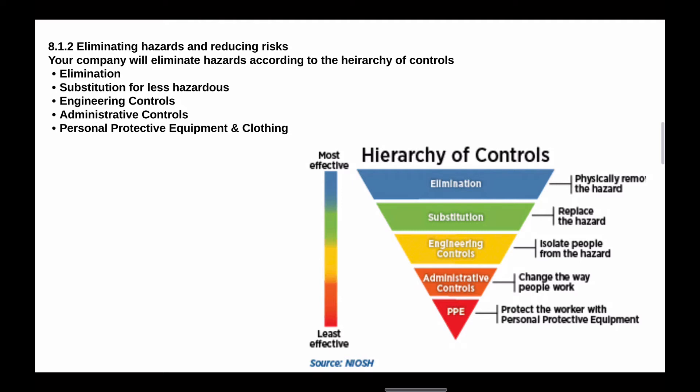If we also had to apply the same to the storage, handling, and usage of hazardous chemical substances — again, how you would apply the hierarchy of controls to manage those substances: how you would eliminate, how you would substitute, what engineering controls, what administrative controls, policies, procedures, work instructions, and PPE you would utilize to make sure that you meet the commitments of your health and safety policies.